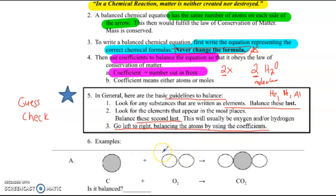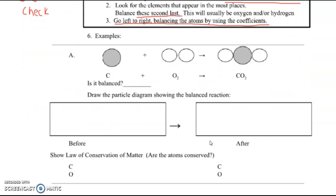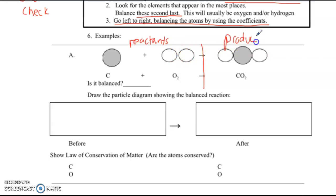We'll start easy. It might be helpful if you have some colored pencils, crayons, markers, or highlighters so you can color-code with me. Here's an equation. On the left of the arrow — the reactants — I have one carbon and one molecule of O2. On the right, I have one molecule of CO2 — that's the product. On the left there's one carbon; on the right, one carbon. On the left, two oxygen; on the right, two oxygen. Is this balanced? Yes. We're going to go ahead and draw a particle diagram of this.